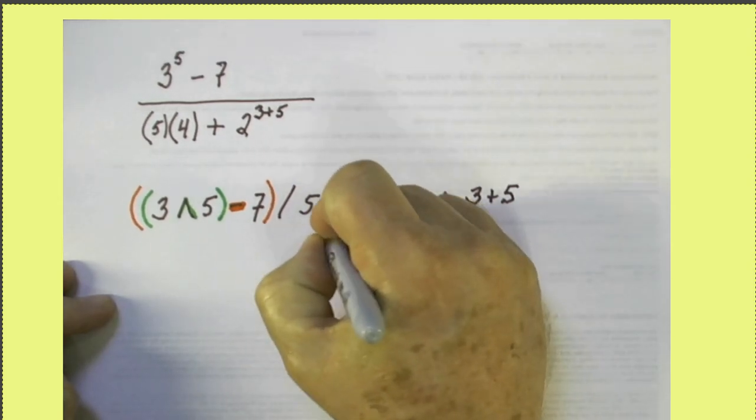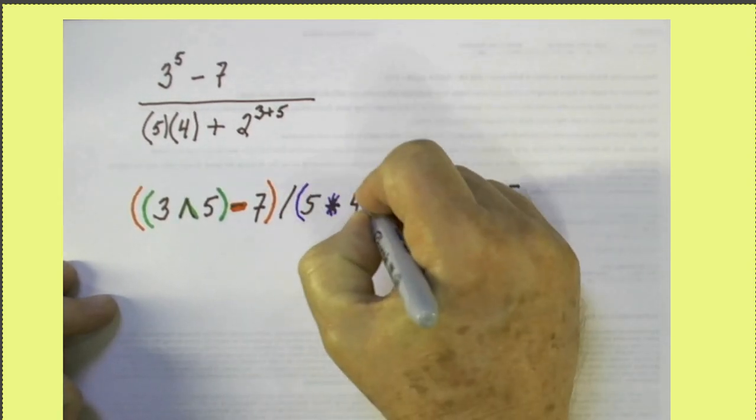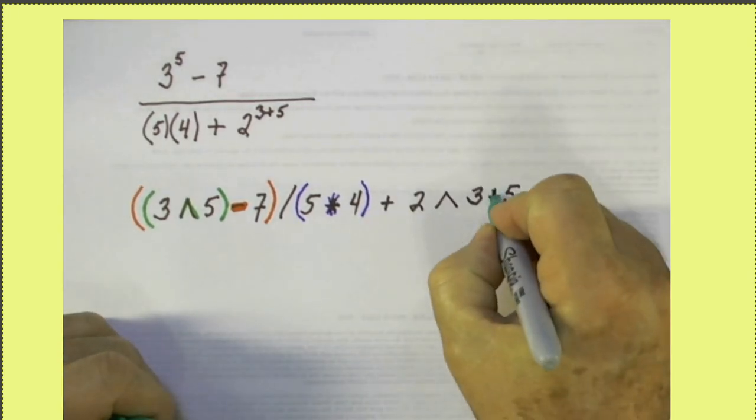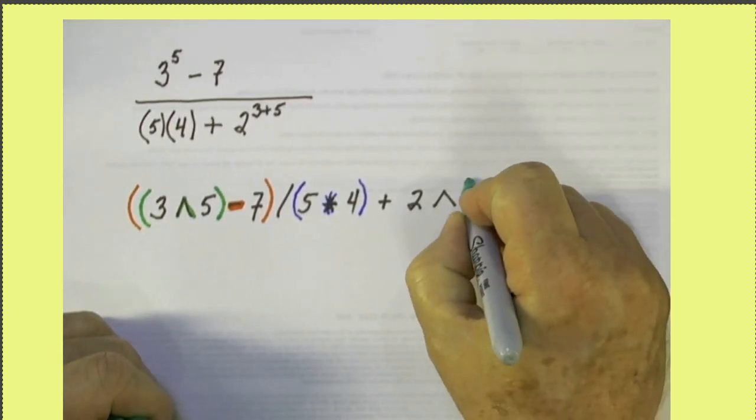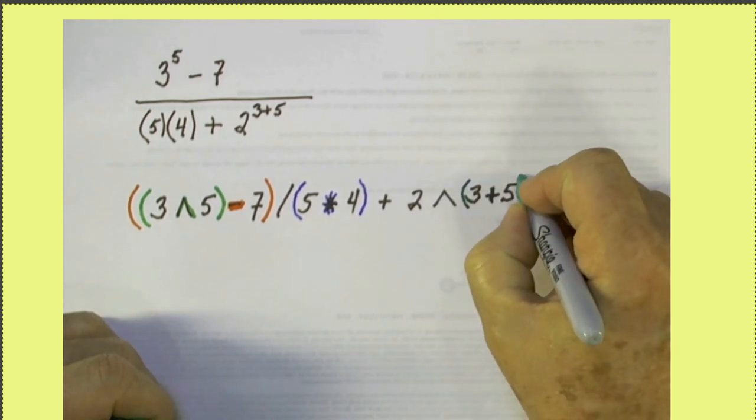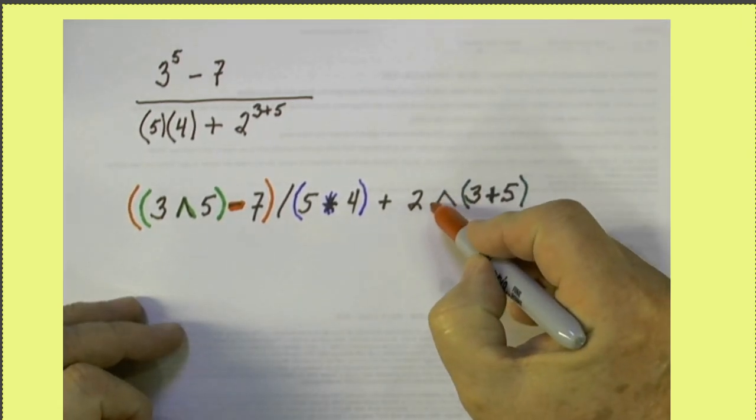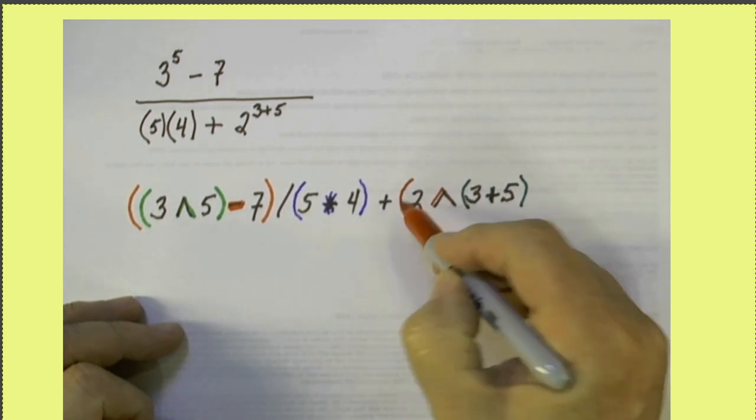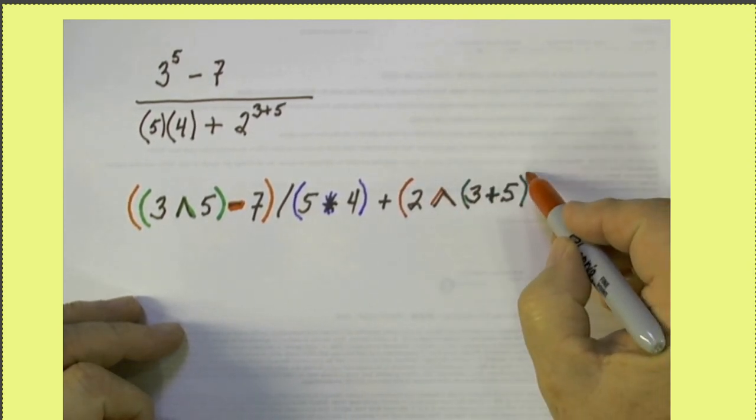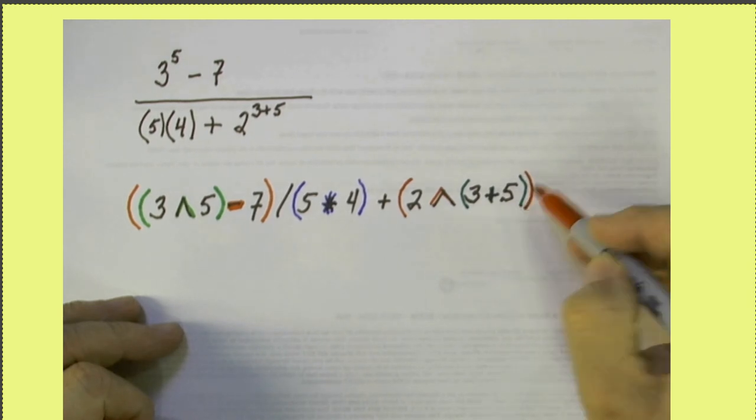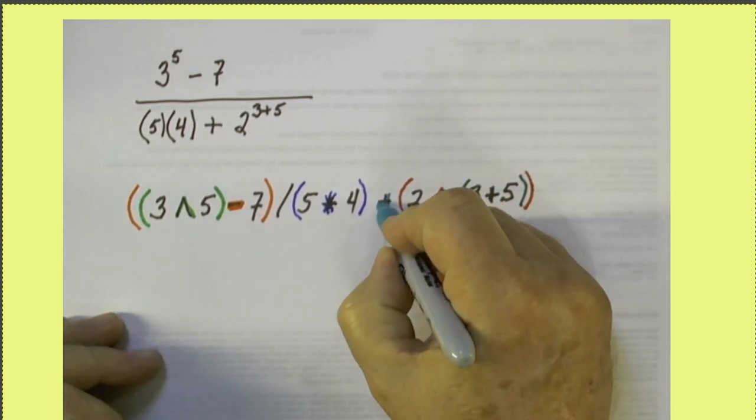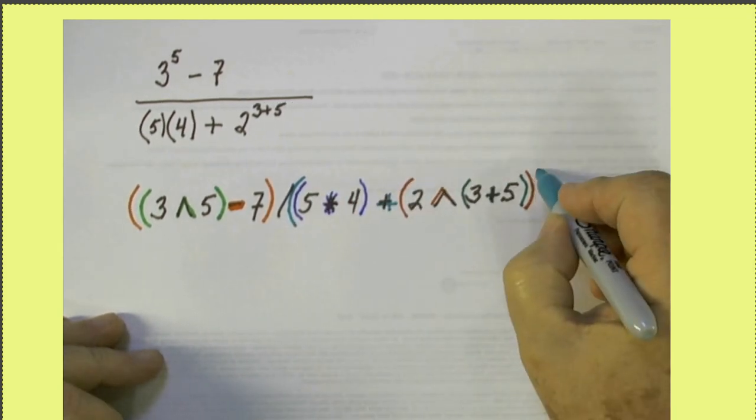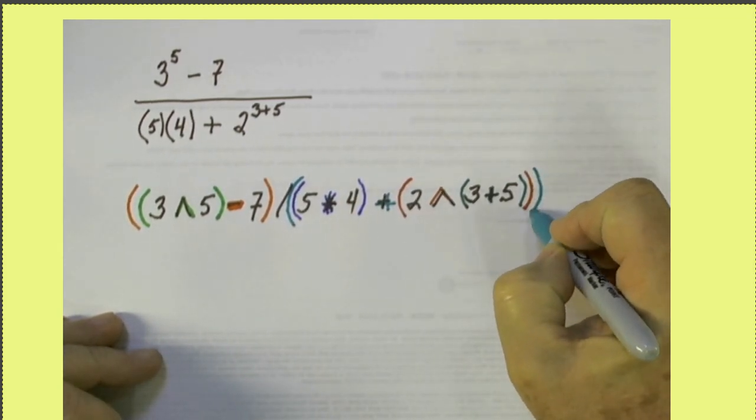This multiplication involves the 5 and the 4. Notice that this addition involves this 3 and 5. This exponentiation involves this 2 and the number that we get from that 3 plus 5. This addition involves this number that's in the blue and this number that's in the red.